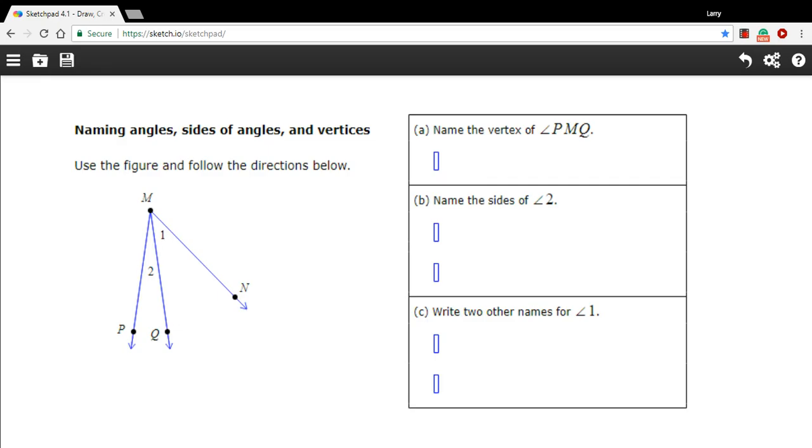You can see we've got the letters here. M is the letter of the vertex of these angles, the endpoint right here at the point of the angle where it starts. And then you've got these rays coming out with points on the rays to define those rays.